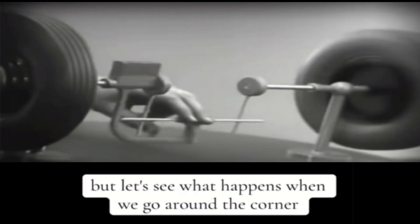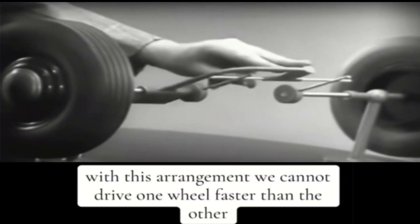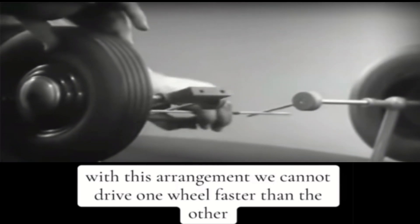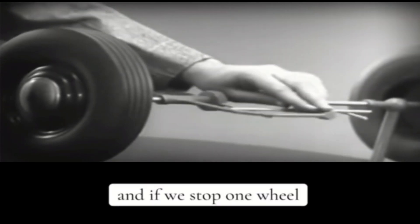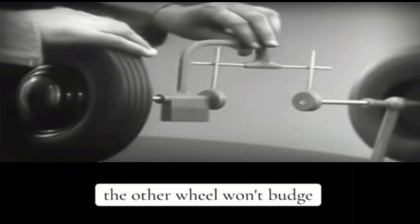But let's see what happens when we go around the corner. With this arrangement, we cannot drive one wheel faster than the other. And if we stop one wheel, the other wheel won't budge.